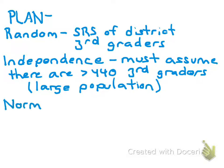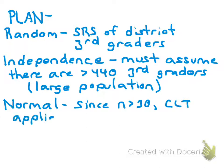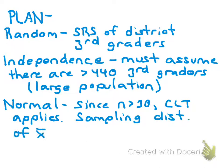For the normality condition, since n is greater than 30, the CLT applies, and the sampling distribution of X-bar is approximately normal, so I'm safe to use the t-procedures. Notice that n is greater than 30 here. You need to think about what happens if n is less than 30 — we'd then have to make a boxplot and try to assume something about the normality of the population. But here we're safe; n is 44.